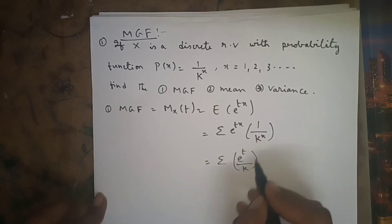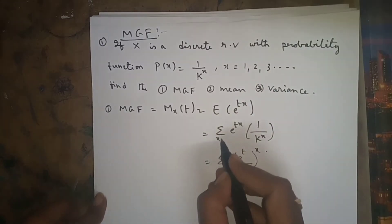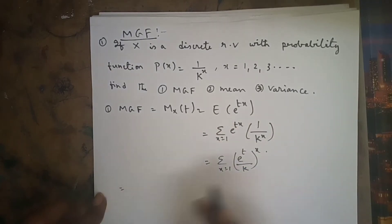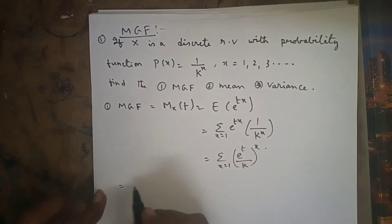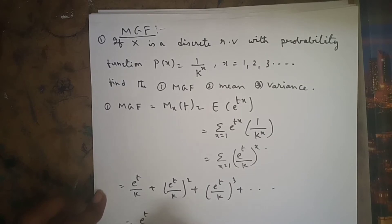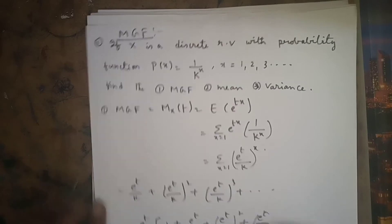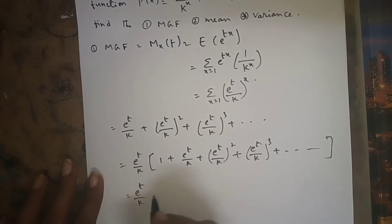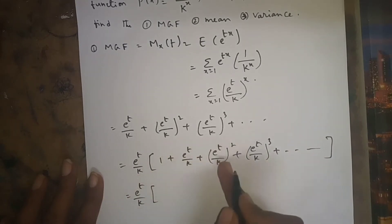With x going from 1, 2, 3, and so on, if we expand the sigma we get: (e^t/k) + (e^t/k)^2 + (e^t/k)^3 + and so on. Taking out the common factor (e^t/k), the remaining part is 1 + (e^t/k) + (e^t/k)^2 + (e^t/k)^3 + and so on.